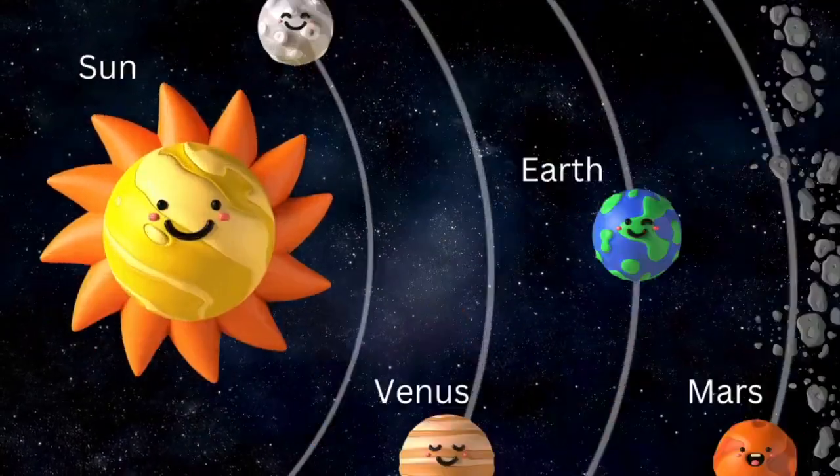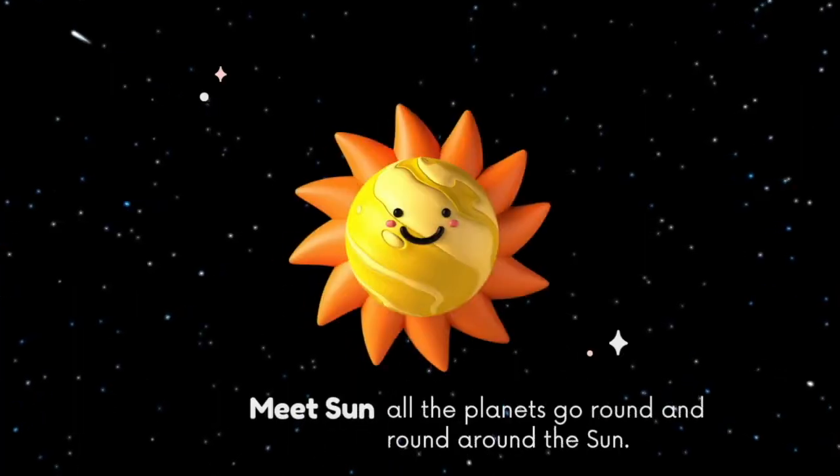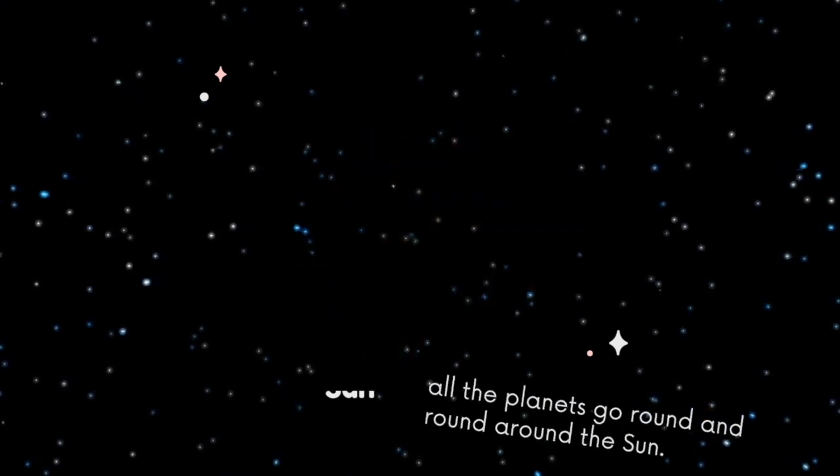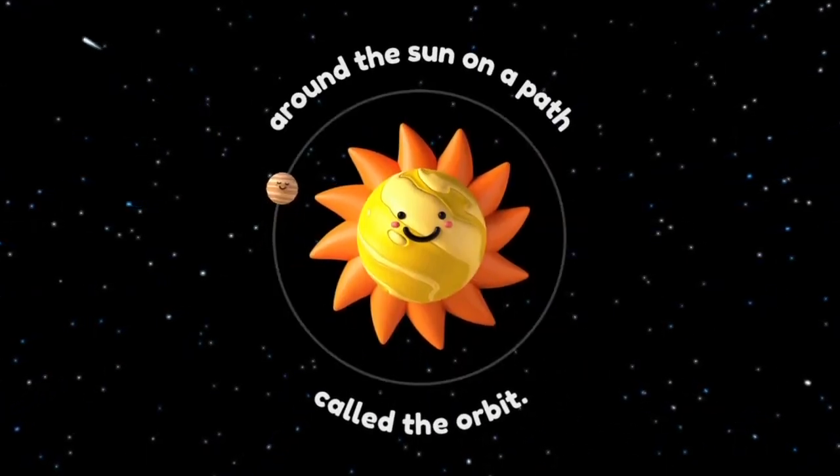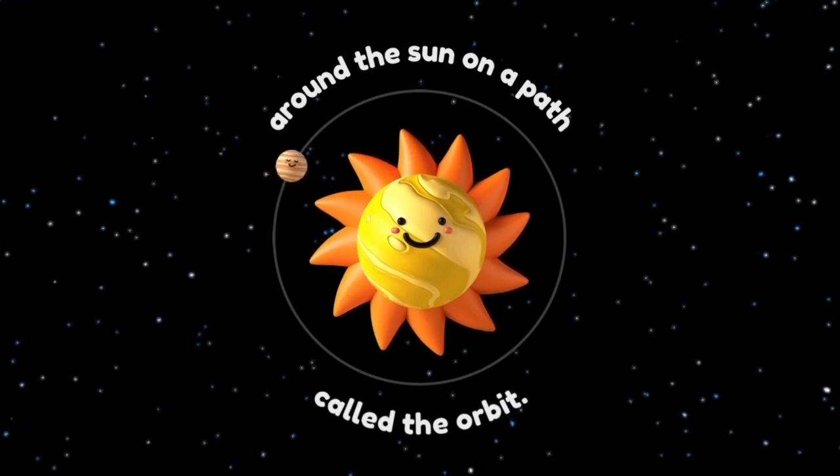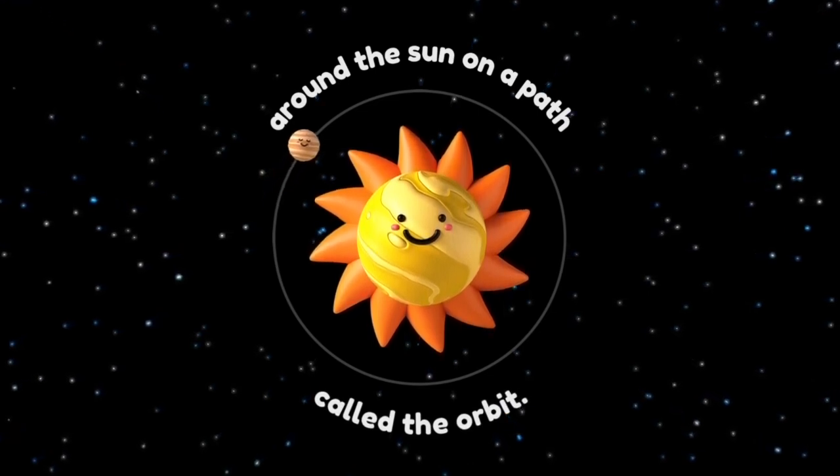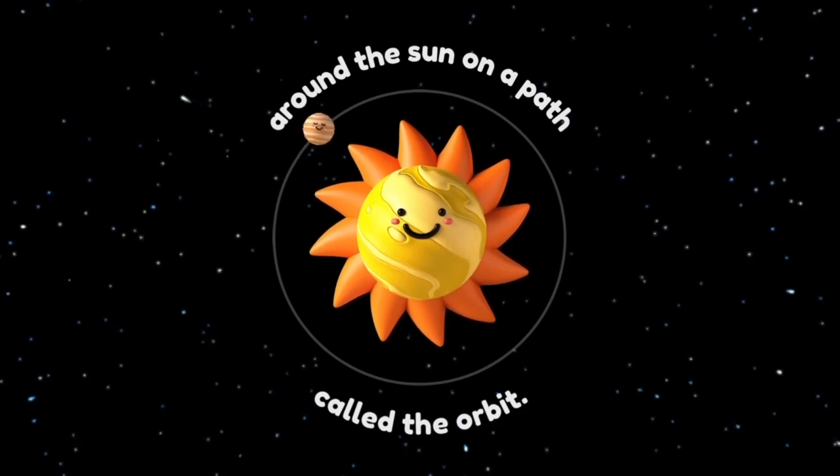Now let's take a look at our Sun. It's very big and all the planets go round and round around the Sun in this path called orbit. Isn't it fun for the planets? And remember kids, the Sun is very, very hot.